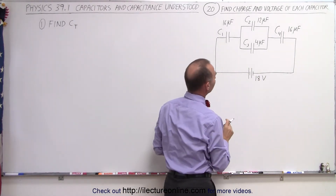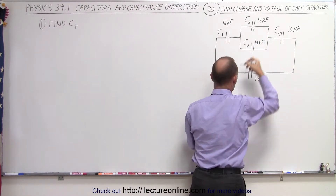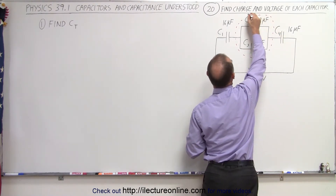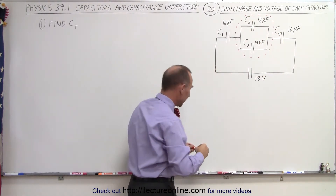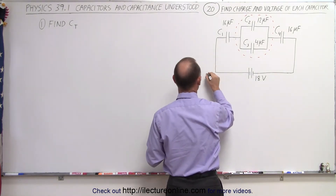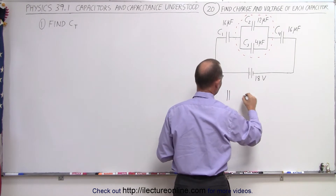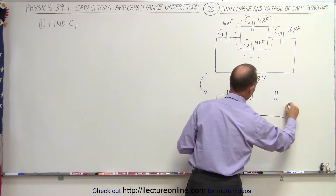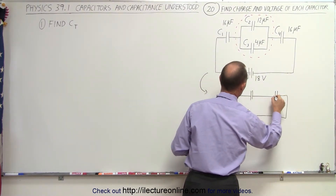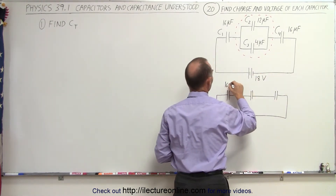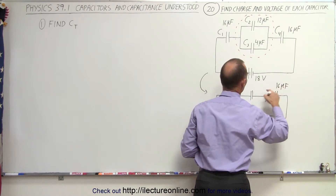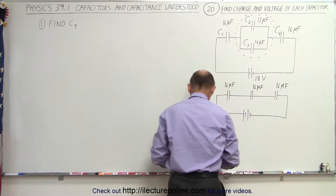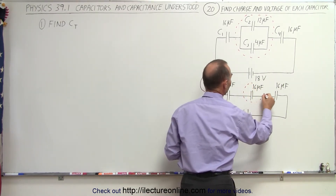To do that, we're going to simplify the circuit. We first take a look at these two capacitors — let me draw a little circle around them. There are two in parallel, and those are easy to add. We simply add them together, so we end up with a new circuit. These are still the 16 microfarad capacitors. This one now is going to be 4 plus 12, which is a 16 microfarad equivalent capacitor.